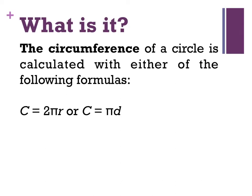How we actually work out the perimeter or circumferences of sectors is by using the circumference of a circle formula. So the circumference of a circle is calculated with either of these: the circumference equaling 2πr or the circumference equaling π times the diameter.